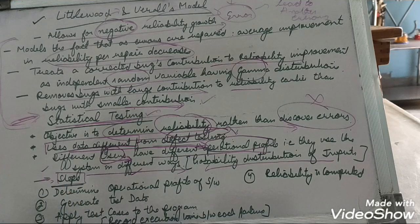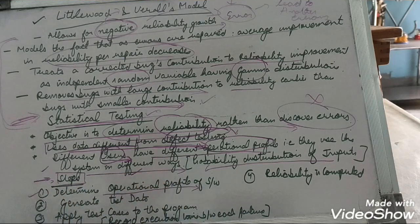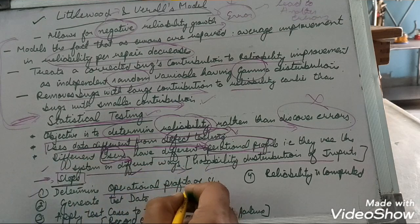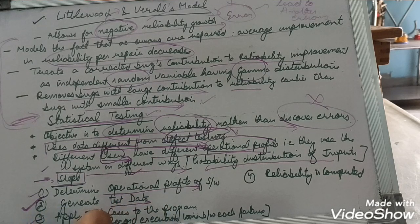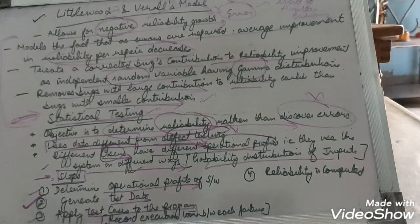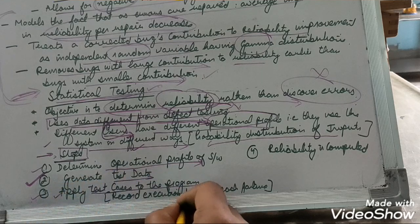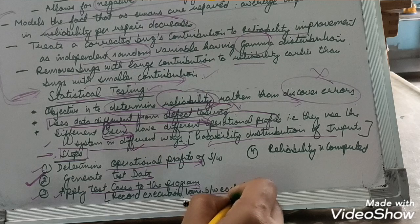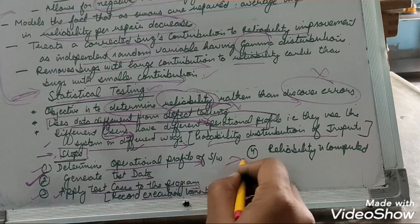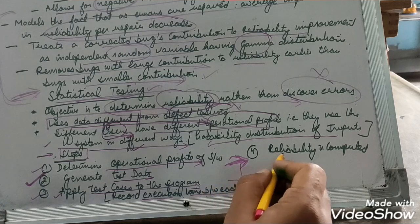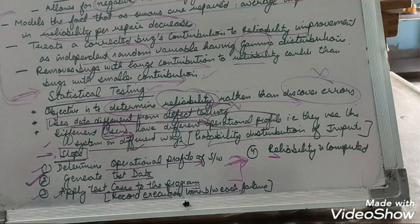The steps for statistical testing are: first, define the operational profile of the software based on usage patterns. Second, generate the test data — the inputs with which the software is to be tested. Third, apply the test cases to the program and record the execution time between each failure. Using these parameters with a reliability model, the reliability can be computed.